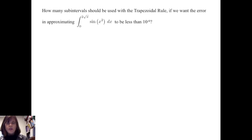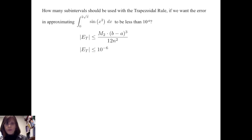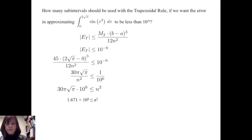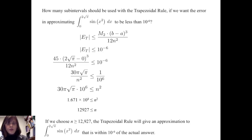A subsequent question is: how many subintervals should be used with the trapezoidal rule so that the error in approximating the definite integral from 0 to 2√π of sin(x²) dx is less than 10⁻⁶? Starting with the same error formula, we want M sub 2 times (b−a)³ divided by 12n² to be less than 10⁻⁶. Solving for n, we find that choosing at least n equals 12,927 equal subintervals will give an approximation within 10⁻⁶ of the actual answer.